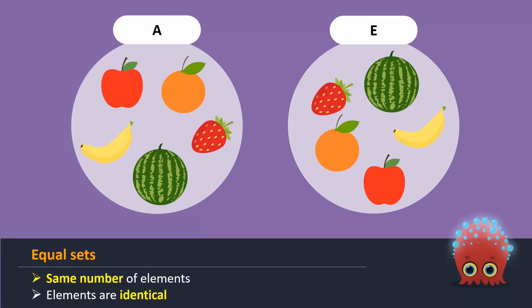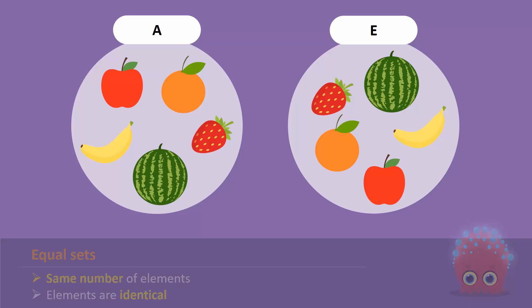When two sets have the same number of elements, and the elements are identical, they are called equal sets. Hence, set A is equal to set E. We can write this as A equals E.